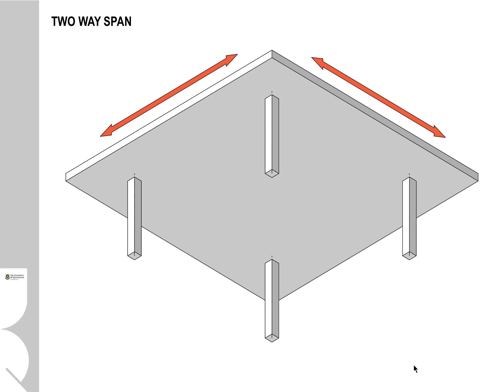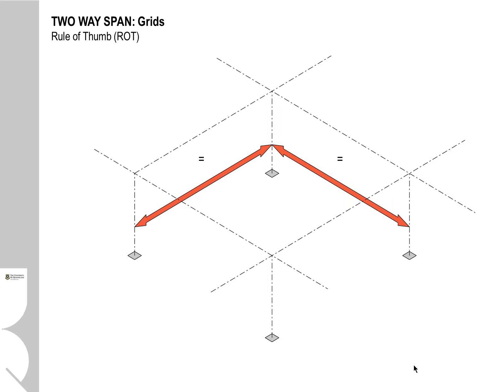A two-way span, as the name suggests, is a slab that is distributing loads down through columns in both an X and a Y direction. Two-way spanning slabs are more efficient than one-way spanning slabs because of the ability to balance out compression and tension in the structure, but they also tend to be more sophisticated structures. When we're setting out structure systems, we tend to set them out on a regular pattern or grid. In an ideal world, an evenly spaced grid for a two-way span is going to be the most optimum structure system.